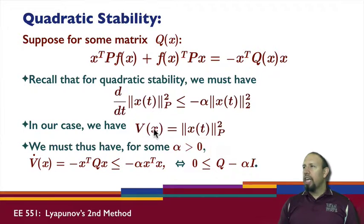So remember, in our case, V of x is the p norm of x squared. And so this inequality, if we in fact have this equal, then V dot is given by this expression, where I have Q as a function of x. So V dot is equal to minus x transpose Qx. And this quantity must be strictly less than or equal to minus alpha x transpose x.